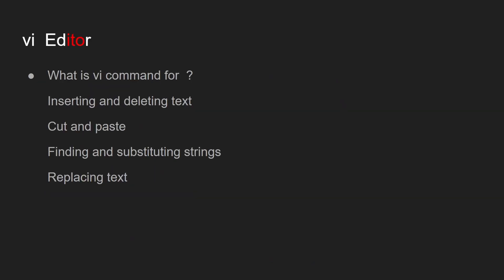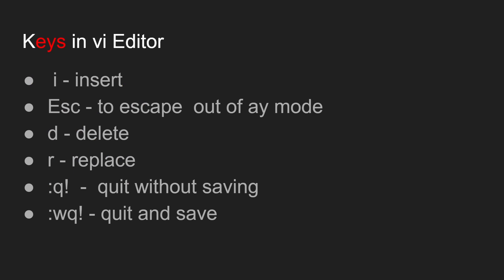The vi command is basically used for inserting and deleting text, cut and paste operations, finding and substituting strings, and replacing text. The most common keys used in the vi editor include 'i' for insert, Escape, Delete, Replace, and some other keys. Let me show you a demonstration of these keys one by one in my Linux system.